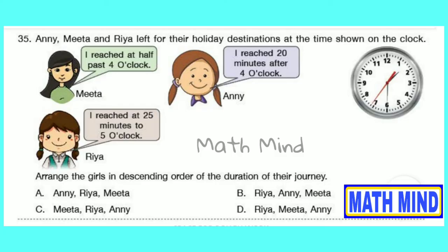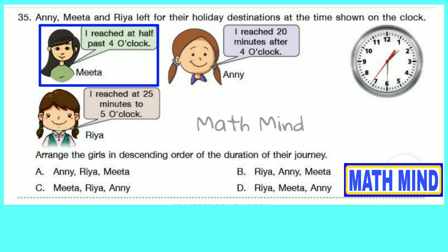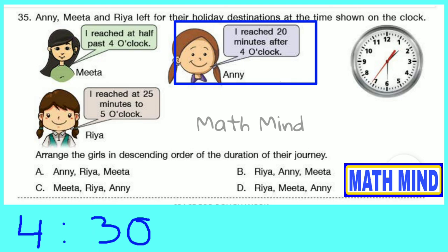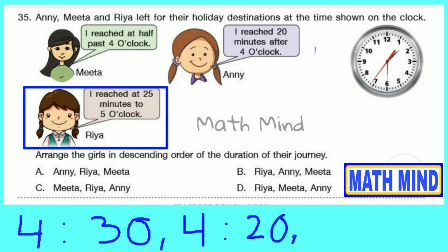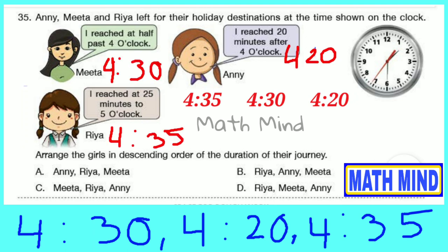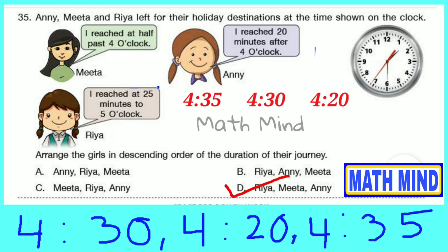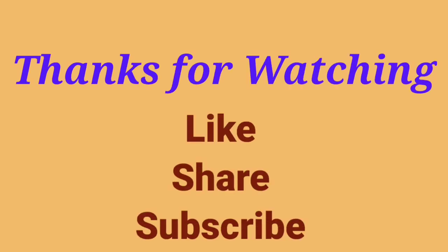Question number 35: Ani, Mitha and Rhea left for their holiday destinations at the times shown on the clock. Arrange the calls in decreasing order of duration of their journey. Mitha reached at half past 4, i.e., 4:30. Ani reached 20 minutes after 4, i.e., 4:20. Rhea reached at 20 minutes to 5, i.e., 4:35. Descending order: Rhea (4:35), Mitha (4:30), Ani (4:20). Option D is correct. Thanks for watching — please like, share and subscribe to the channel.